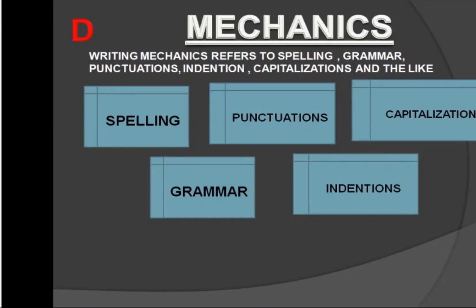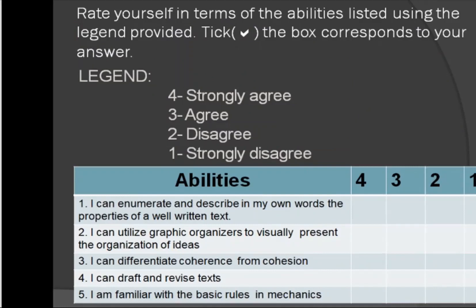So, do you think you can write a well-written text? Let's wrap up and answer some self-checks about your abilities to write a well-written text. Rate yourself in terms of the abilities listed using the legend provided. Tick the box to respond. Number four: I can draft and revise text. Number five: I am familiar with the basic rules and mechanics.